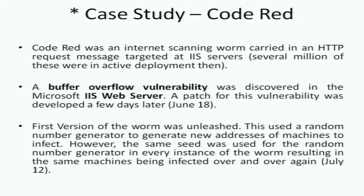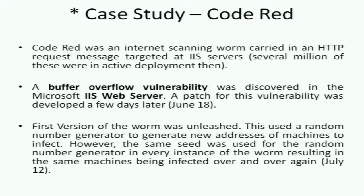The first case study is Code Red, which happened about 12 years ago. Code Red was an internet scanning worm carried in HTTP request messages targeted at the Microsoft IIS web server. Several million IIS servers were in active deployment at the time. The worm writer asked: is this machine very pervasive? The answer was yes. A buffer overflow vulnerability was discovered in the Microsoft IIS web server, and a patch was developed on June 18th, 2001.